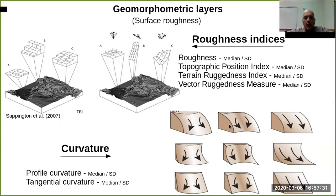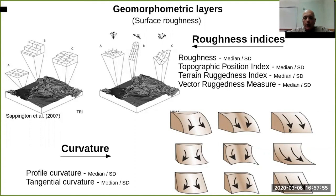As you can imagine, these are also very important for different kinds of erosion applications or even accumulation of water and soil. For example, this concave form can be really important for accumulation in the valley, while others don't accumulate so fast.